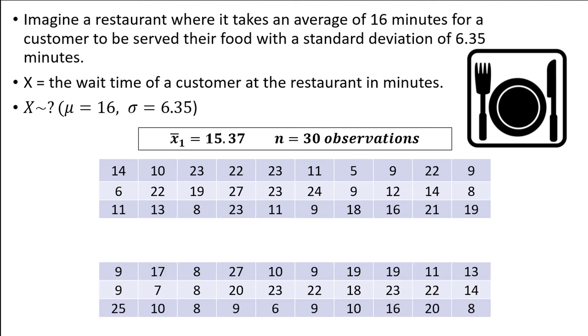Suppose we take another sample of size 30. The mean turns out to be 14.3 this time. In the real world, you would only take one sample, but for explanation purposes, we can take as many samples of size 30 as we want.